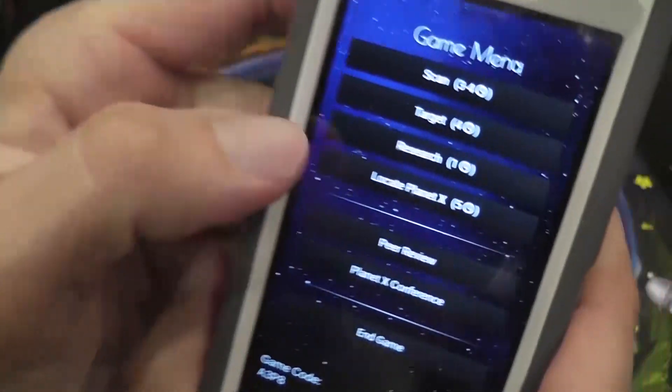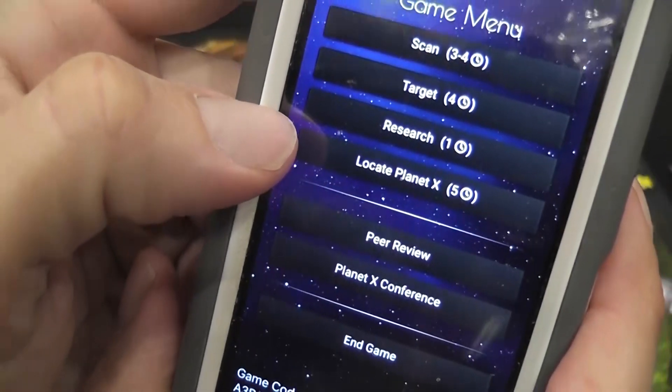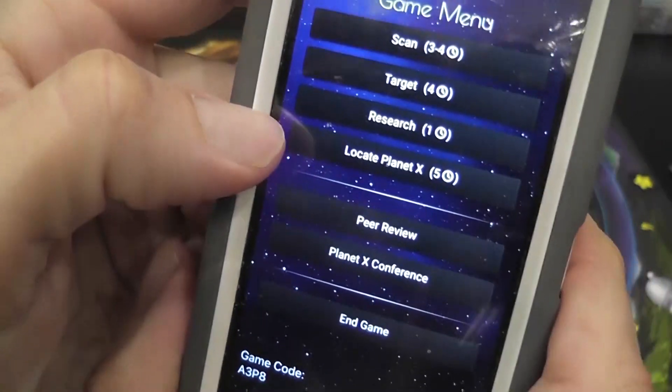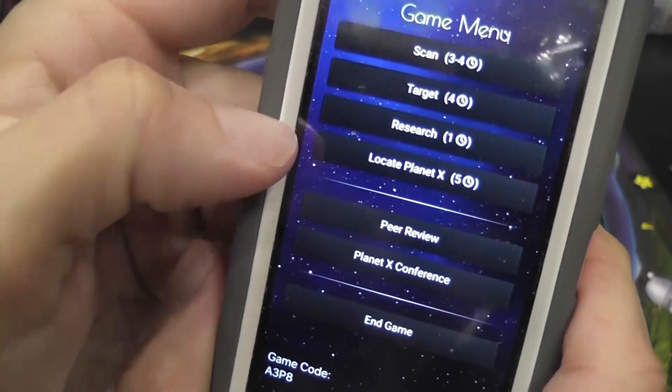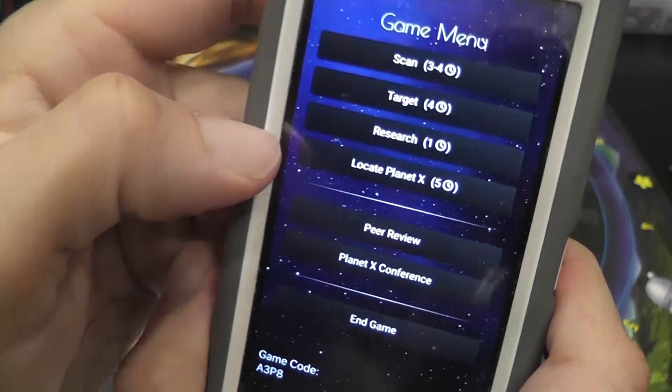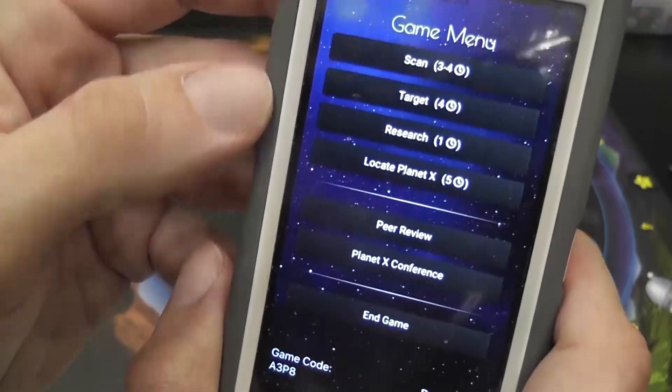At the end of the game, you can try to locate Planet X. If you do locate it, you have to identify the sector and what's in the two sectors next to it. And then you trigger the end of the game.